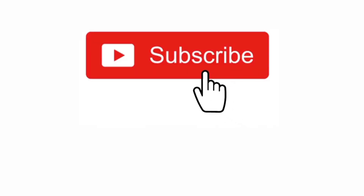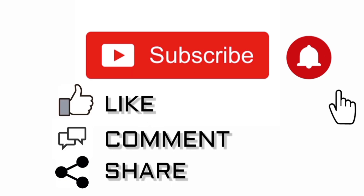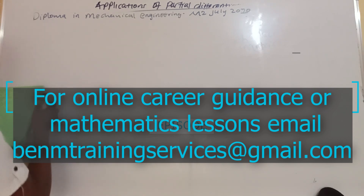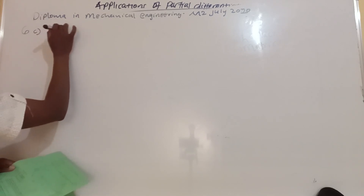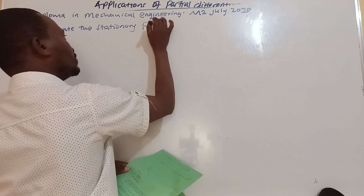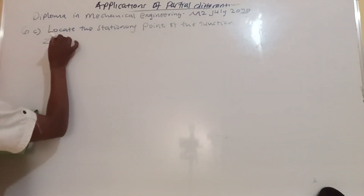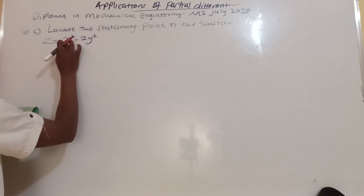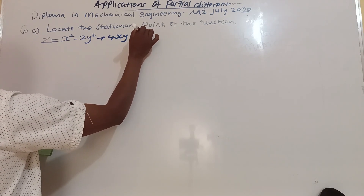Let us go ahead and find the critical points using an example from a past paper. This is question 6C. Locate the stationary points of the function z equals x squared minus 2y squared plus 4xy minus 8x plus 2y, and determine their nature.